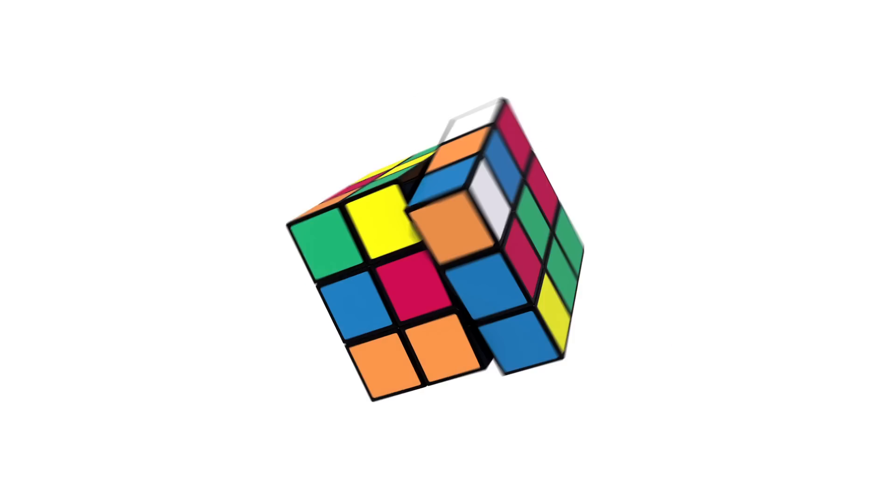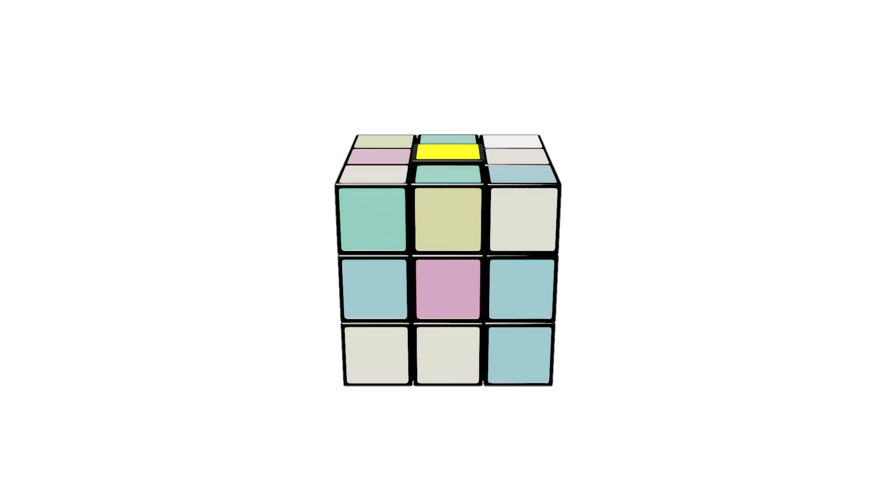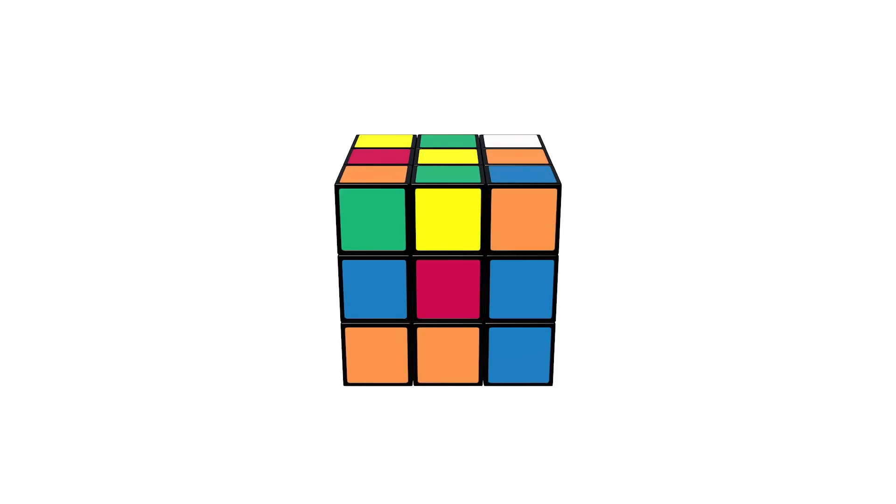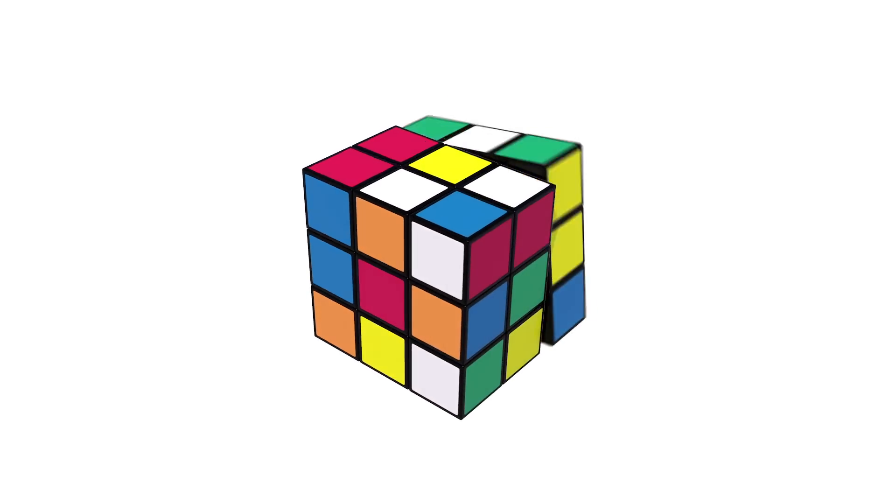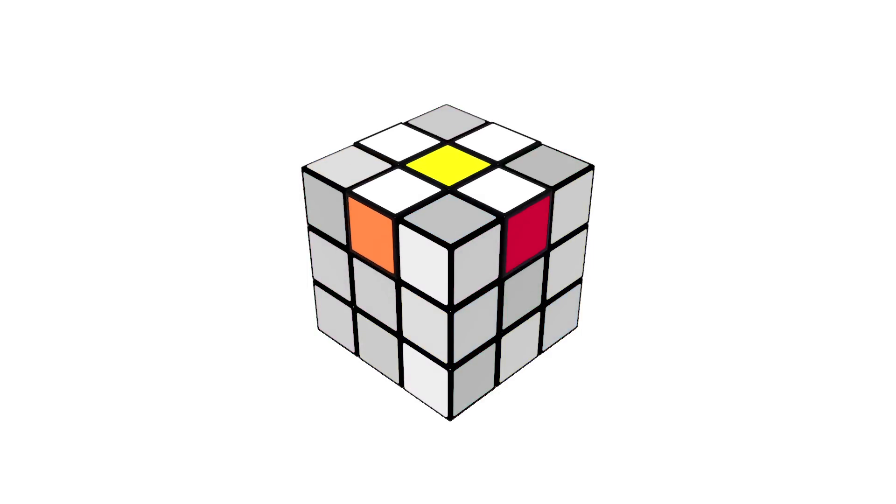Start by holding the cube with the yellow center piece on the up face. Now, find the four white edge pieces and move them so that they are all on the up face so it looks like a daisy. See?